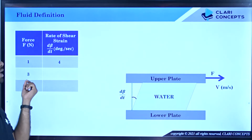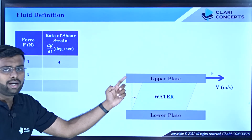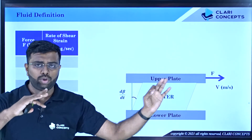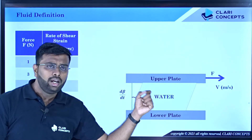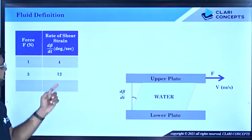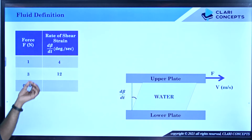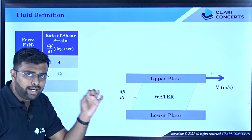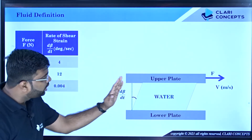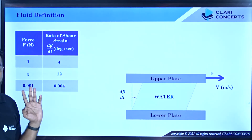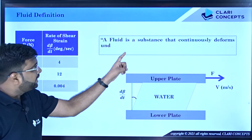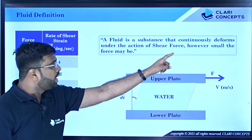If I increase the force to 3 Newtons, the rate of change increases — instead of 4 degrees per second, it becomes 12 degrees per second. If the force is very small, say 0.001 Newtons, the rate will be very small — about 0.004 degrees per second — but the fluid will still continuously deform. This leads us to the technical definition: fluid is a substance that continuously deforms under the action of shear force, however small the force may be.